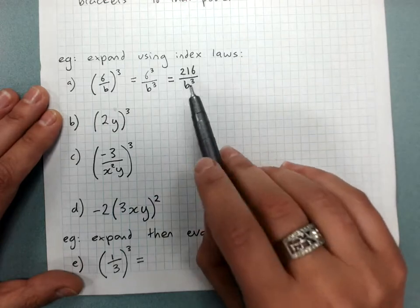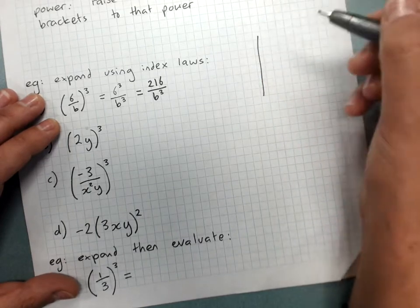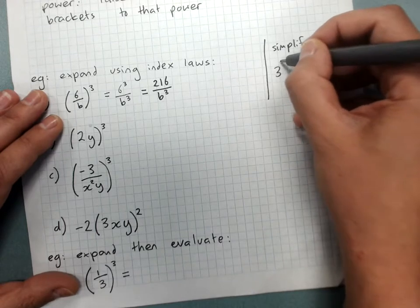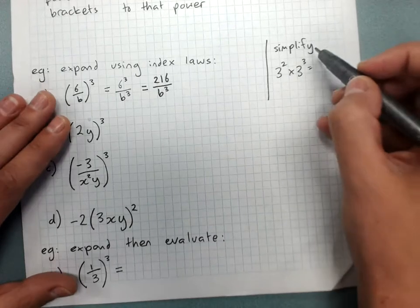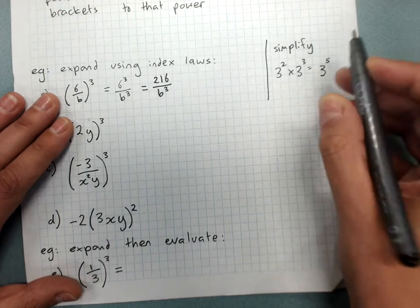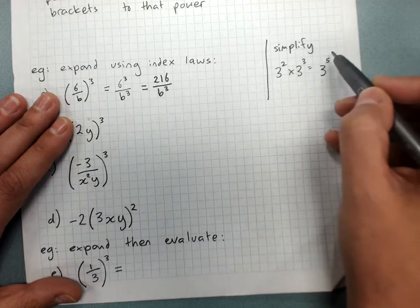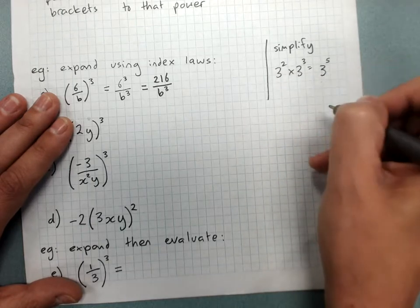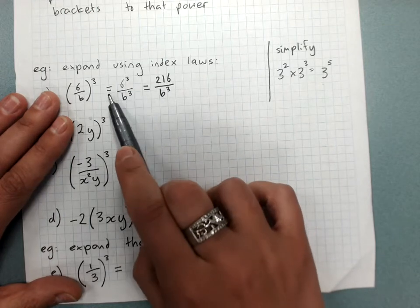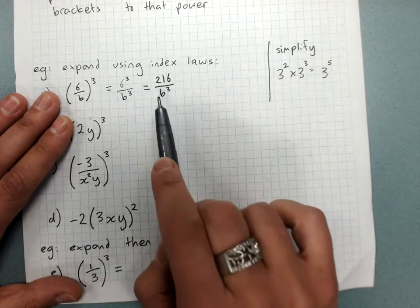When a question says simplify leaving in index form — for example, 3 squared times 3 cubed — that's index law 1: same base of 3, add the powers to get 3 to the power 5. If told to simplify and leave in index form, leave it like that. If told to evaluate, get a number answer. When there are both letters and numbers to powers in the answer, evaluate the number power and leave the letter power as a letter power.